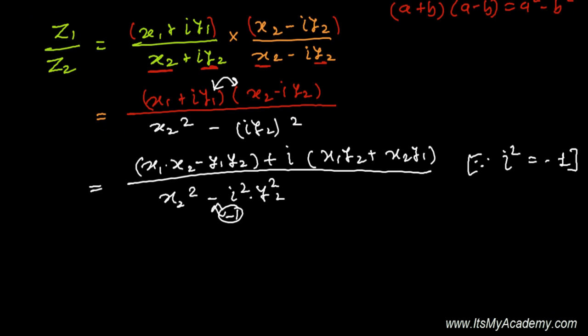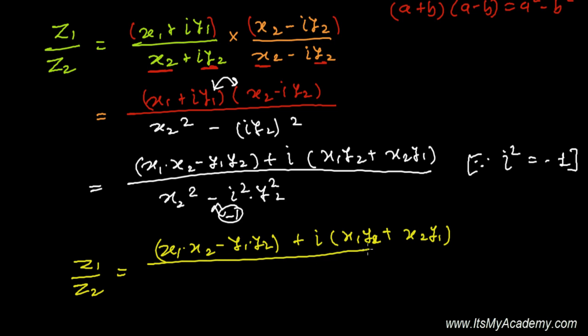I'm writing one more time uniquely: z1 divided by z2 equals (x1·x2 - y1·y2) + i(x1·y2 + x2·y1) divided by x2² + y2².